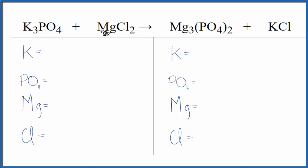This is a double displacement reaction where the potassium and the magnesium, they switch places. And we use a bit of a trick to make it easier to balance. You can use this on most double displacement reactions.